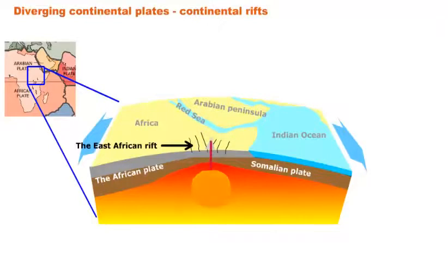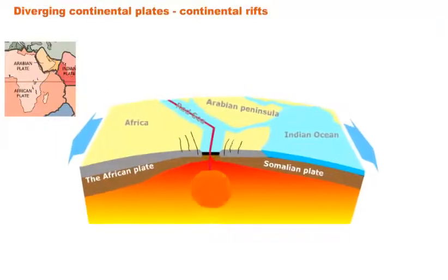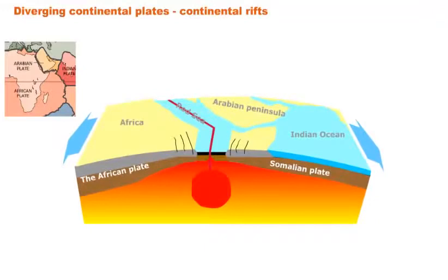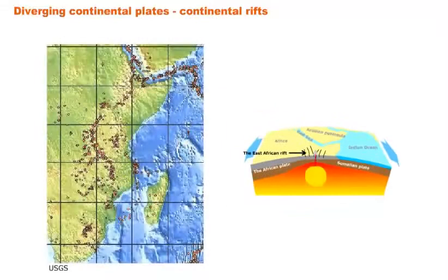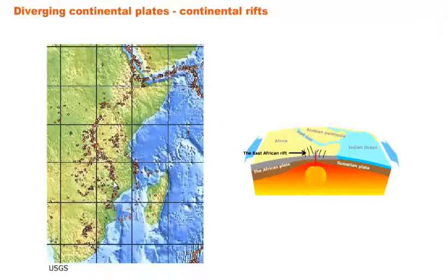If the African plate and the Somalian plate continue to move apart, an ocean will eventually form between the two continents — much like when Pangaea separated and the Tethys Sea formed, or when Africa and South America separated and the Atlantic Ocean formed. The earthquake map shows a definite pattern of shallow earthquakes forming a line right through the rift zone, indicating a separating movement with no subduction or sinking happening.